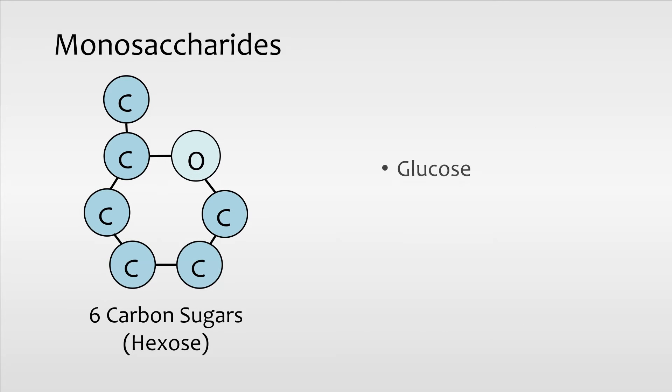Glucose, fructose, and galactose are the common 6 carbon sugars. They are isomers, which means these molecules have the same number and types of atoms, but each of their 3 dimensional arrangements are different from the other.